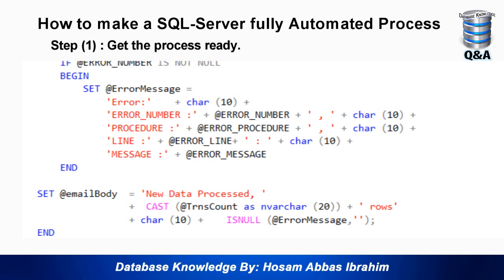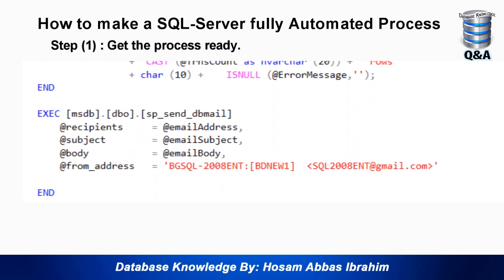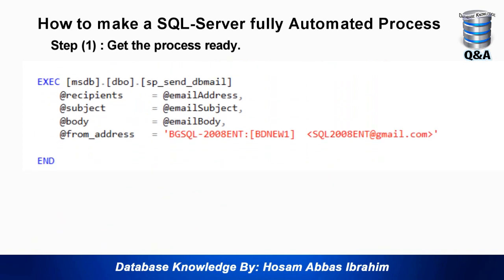Then I set the email body to 'New data processed' plus the transaction count — how many rows were processed — plus the error message if any. After handling both cases, I send an email. To send an email we have to configure Microsoft SQL Server database email, which we will do in step two. But this is how to send it: execute from msdb a system stored procedure called sp_send_dbmail.